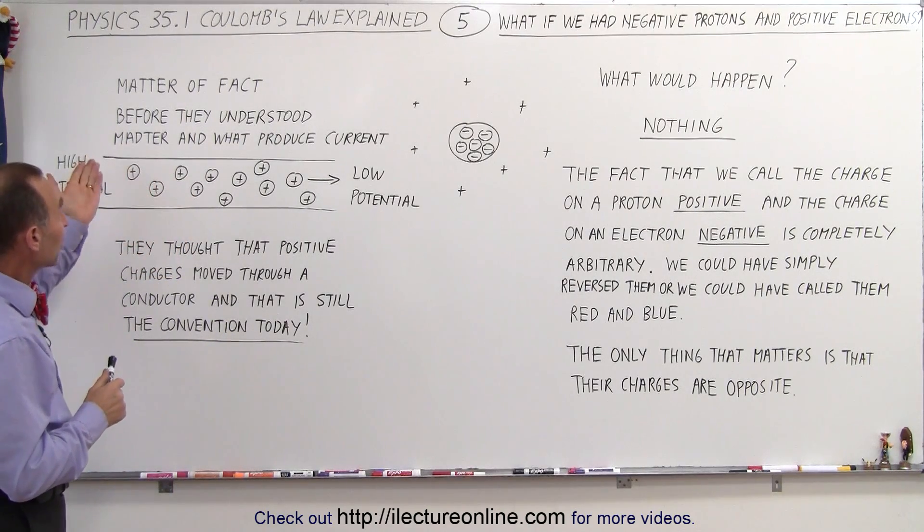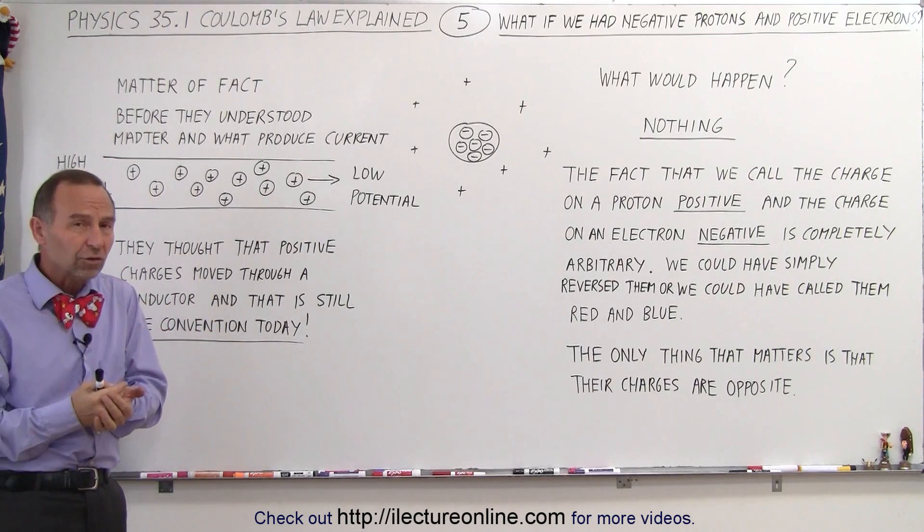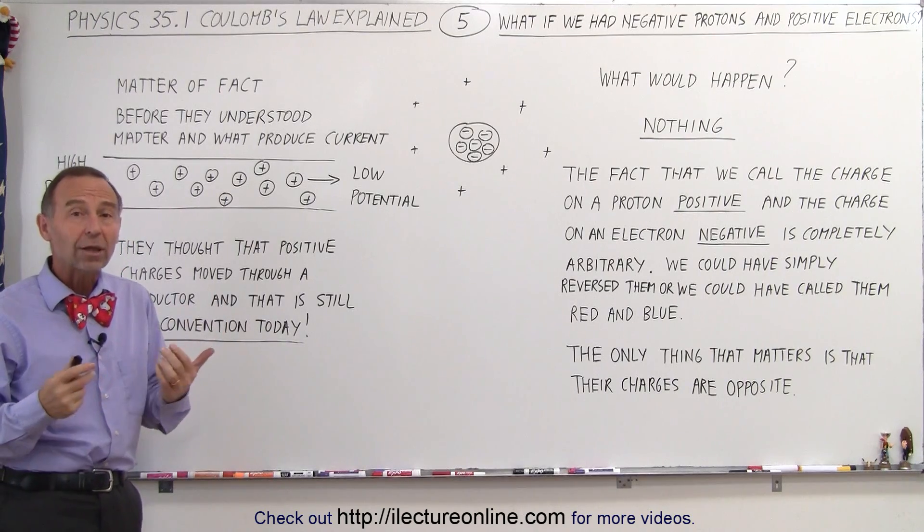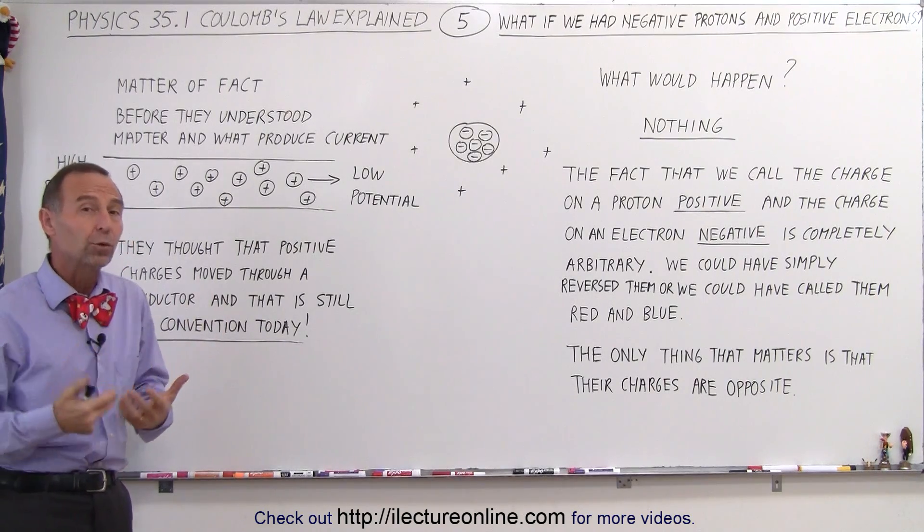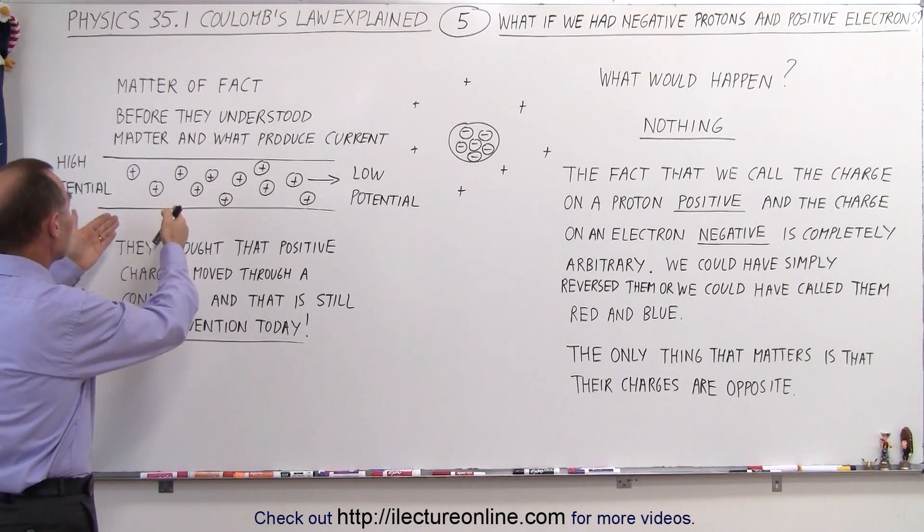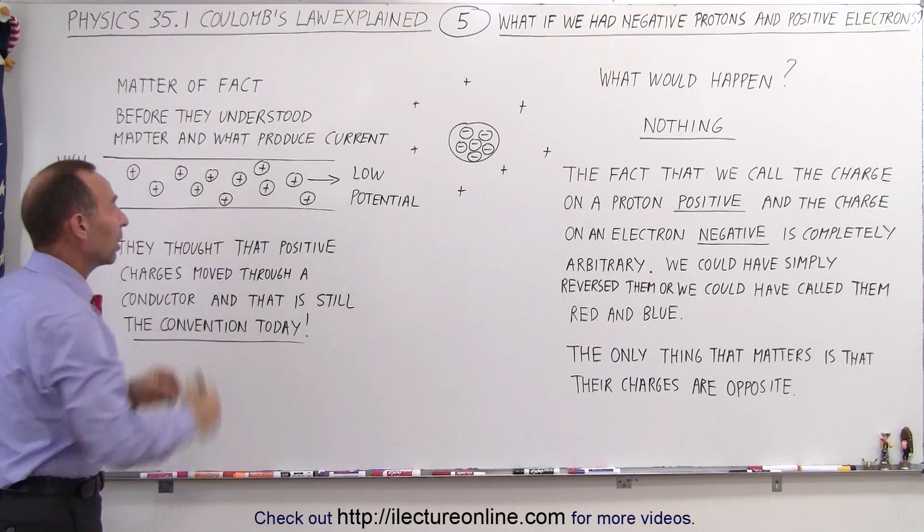Matter of fact, before they understood exactly what charges were and how charges move through conductors, they didn't know that charges moved through the conductor and that there was a current there. They thought that it was the positive charges that were doing the moving. And so we thought that charges being positive moved through the conductor from a high potential to a low potential.